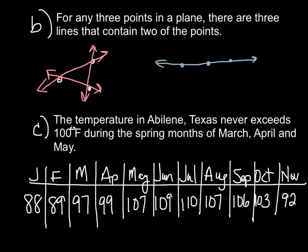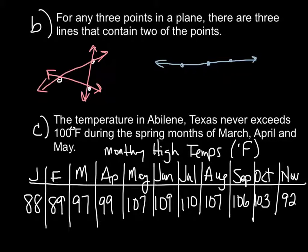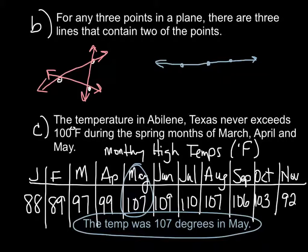And the last one is C. The temperature in Abilene, Texas, never exceeds 100 degrees Fahrenheit during the months of March, April, and May. Now there actually is a title here. This is in your book. The title actually says, Monthly High Temps in Degrees Fahrenheit in Abilene, Texas. So you have to prove a counterexample. The temperature in Abilene, Texas, never exceeds 100 degrees during the months of March, April, and May. So let's look at March, 97. Nope. It works. April, yep, it works. Oh, May. May is 107 degrees. So literally all you have to write is that your counterexample is that the temperature in May was 107 degrees. Therefore, you've just proved that that conjecture is false.